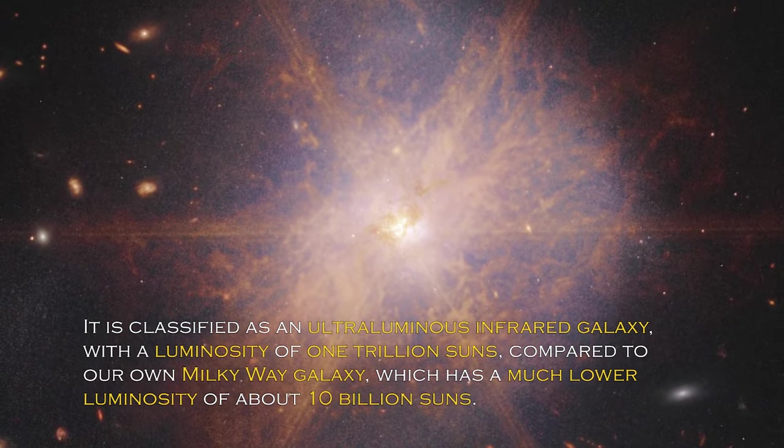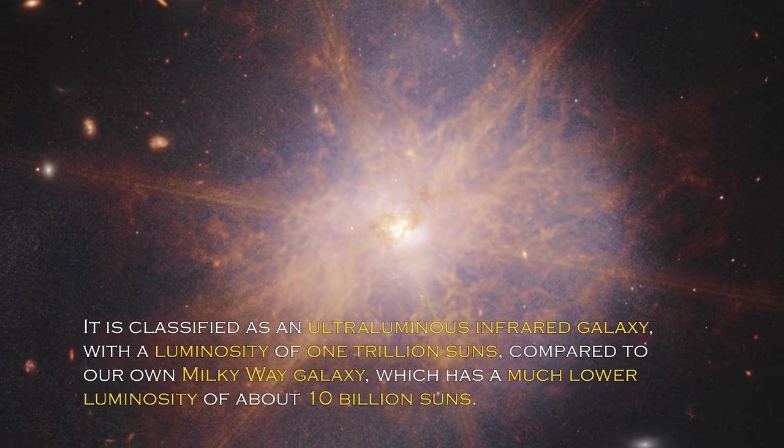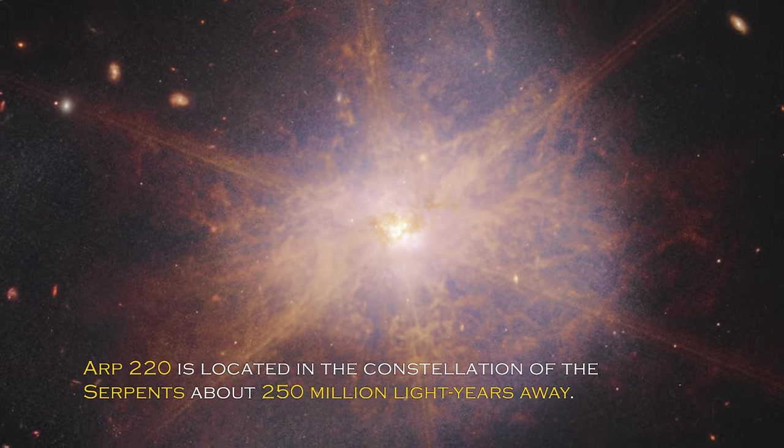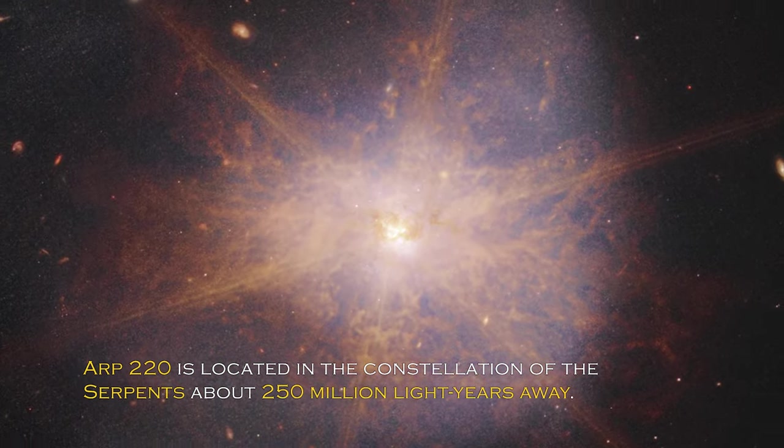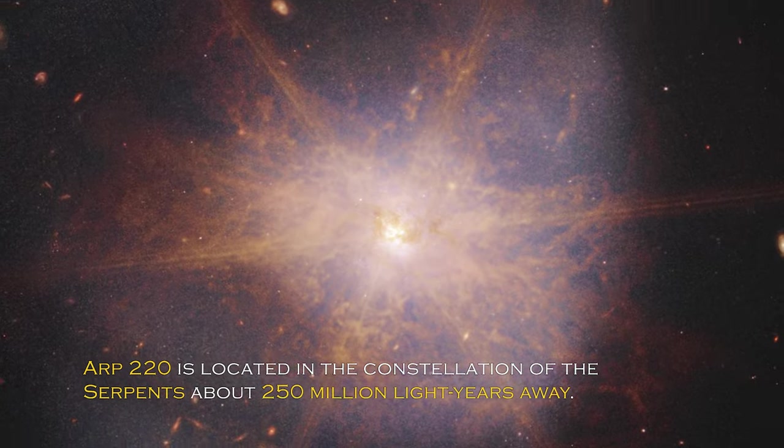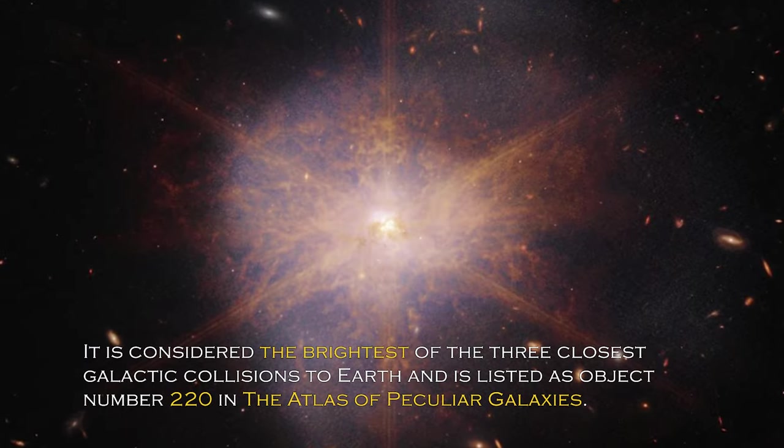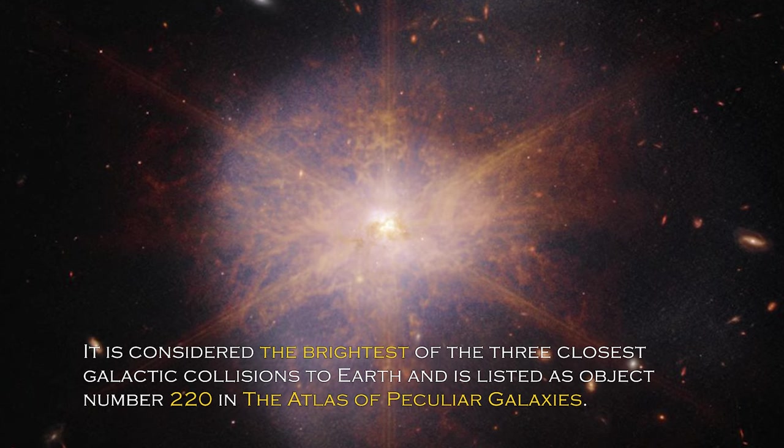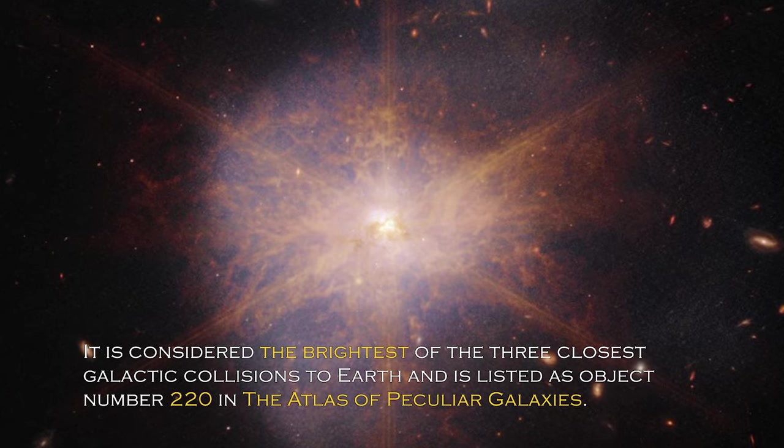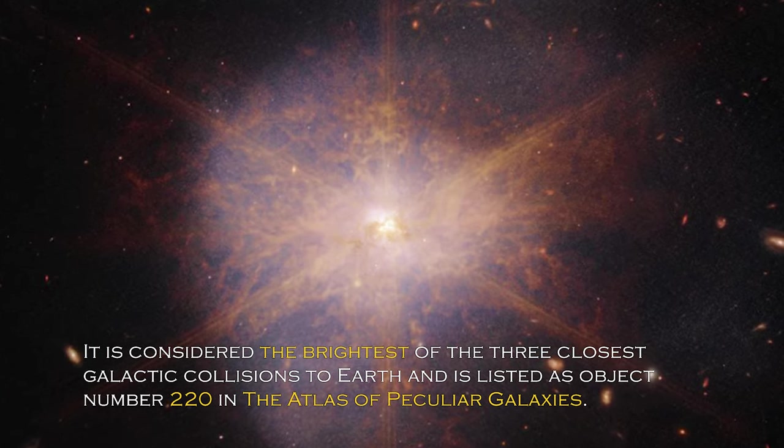Compared to our own galaxy, the Milky Way, which has much lower luminosity of about 10 billion suns, ARP 220 is located in the constellation of the Serpent, about 250 million light-years away. It is considered the brightest of the three closest galactic collisions to Earth.